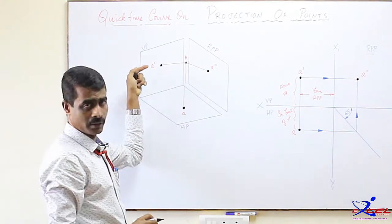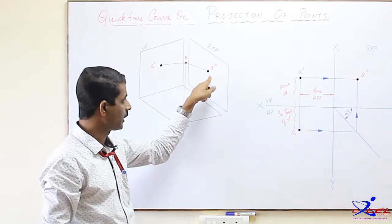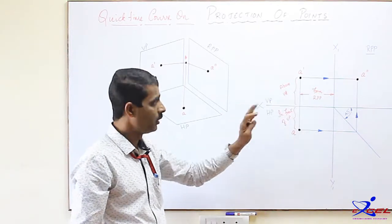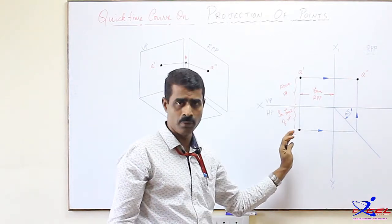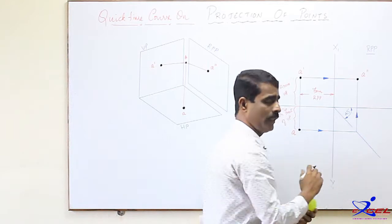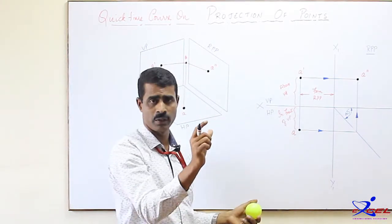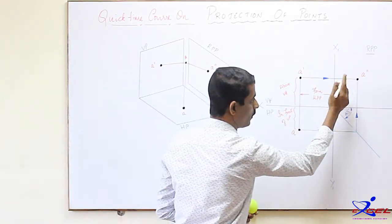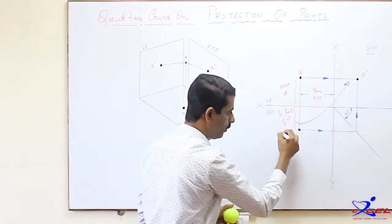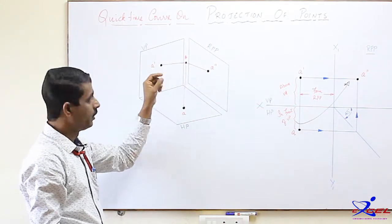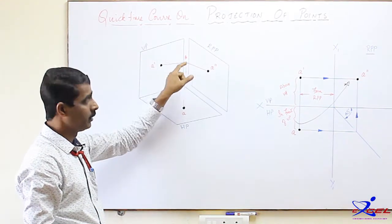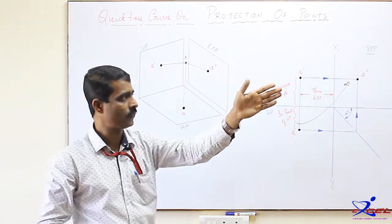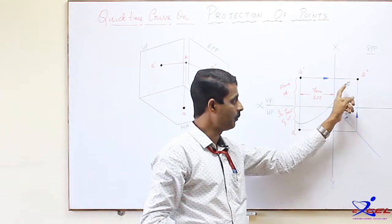The side view is obtained by looking orthogonal to RPP — we call this A double dash, the left side view projected on the right profile plane. To obtain it, after drawing the X1Y1 line, a line at 45 degrees is drawn. The distance from the X1Y1 line in the side view is the same as the in-front-of-VP distance — if the point is more in front of VP, the side view shifts more from the RPP.